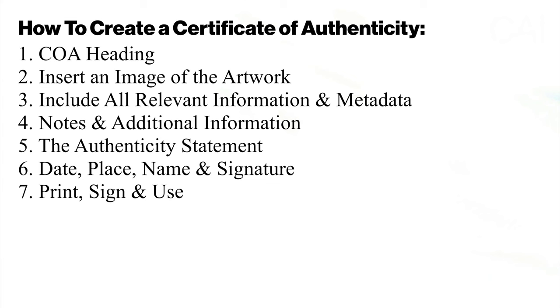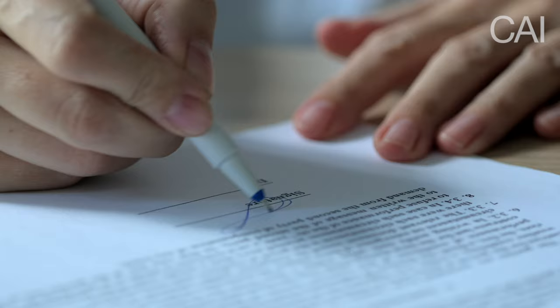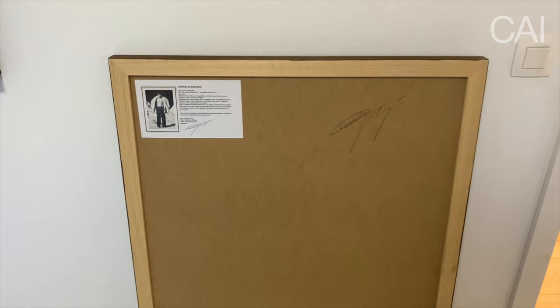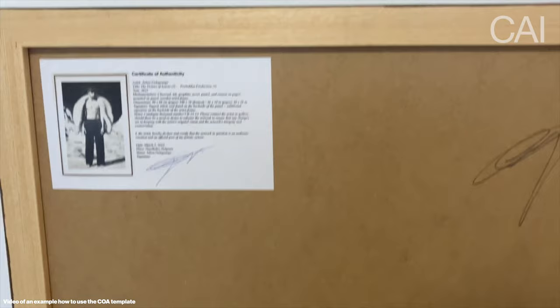Step seven: print, sign, and use. Having completed the six steps above, it is now time to print your document, sign it to make it official, and use it. There are different ways you can use it, but the most important thing is that it travels well with the collector. You can sign and laminate it and hand it over to a collector, simply print it and send it by post in an envelope, or when there is a solid backside or base — something I very much like to do — you can print the COA directly onto white sticker paper to peel and paste it directly on the backside of the artwork.